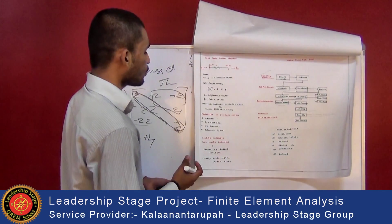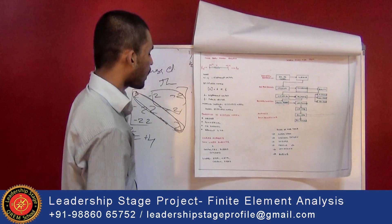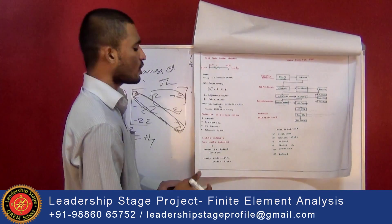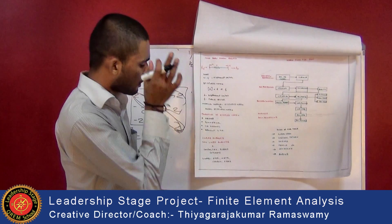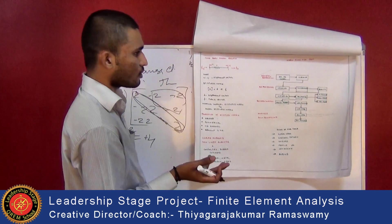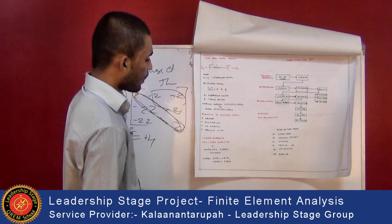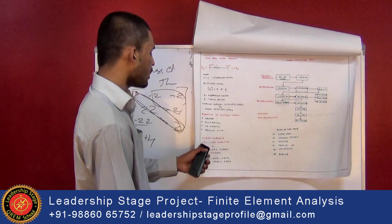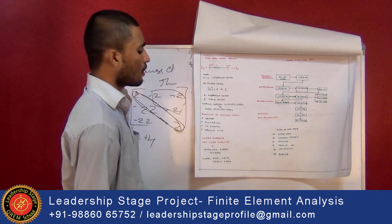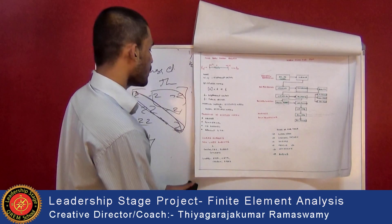There are two types of analysis in the finite element method: linear analysis and non-linear analysis. In non-linear analysis, we analyze materials like composite materials, rubber materials, and concrete materials. In linear analysis, we analyze materials like steel, metal, carbon, and fiber.